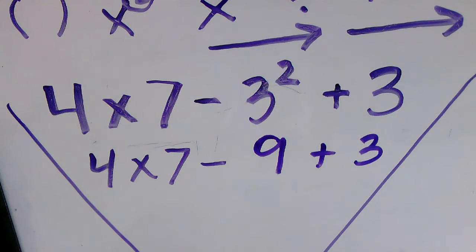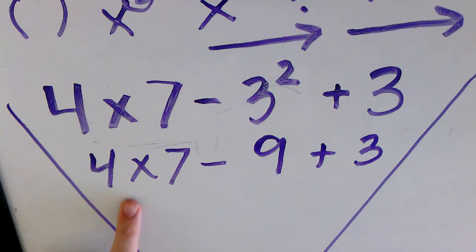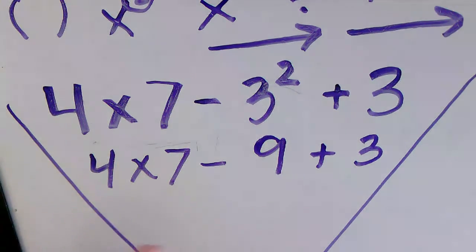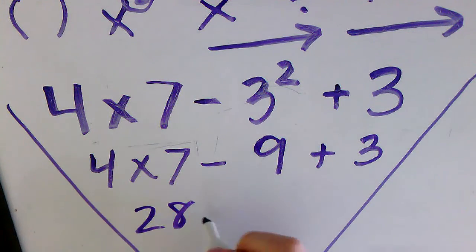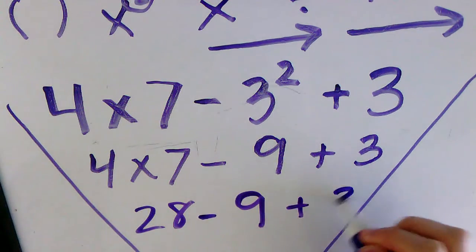Now I need to see if I have multiplication and division, because they're created equal. Whatever comes first, I do first. What comes first is multiplication, and I don't have any division. So 4 × 7 is 28, and I bring everything else down: minus 9 plus 3.